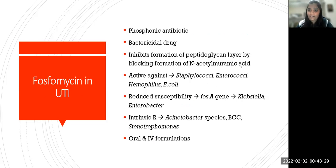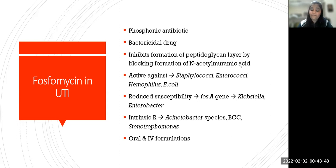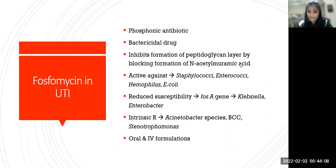The next most common antibiotic used in UTI is fosfomycin. It is a phosphonic antibiotic which is a bactericidal drug that acts by inhibiting the formation of the peptidoglycan layer by blocking the formation of N-acetylmuramic acid. It is active against both gram-negative and gram-positive organisms, including staphylococci, enterococcus, Haemophilus species, and Escherichia coli. For other enterobacterials like Klebsiella and Enterobacter, there is reduced susceptibility due to the presence of the fosA gene.